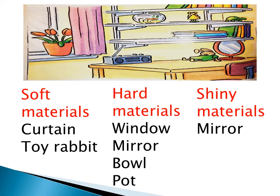And the pot which the plant is inside — this is also a hard material. There is another sorting: shiny materials, like the mirror. Maybe the shelves are shiny because of the light. We can also put them into two groups: small materials or large materials. This is another sorting.